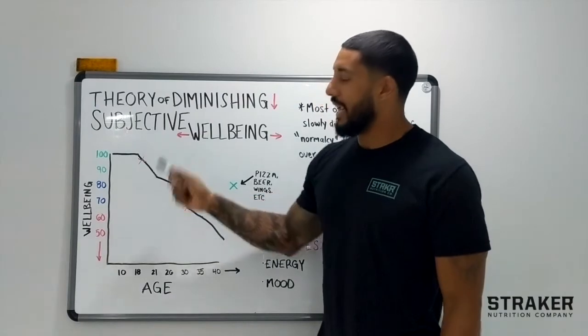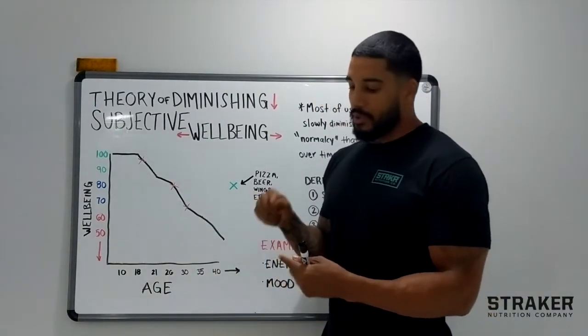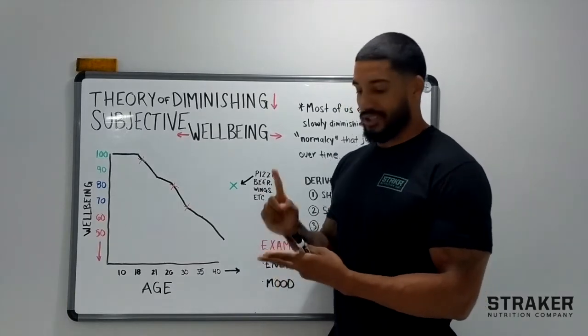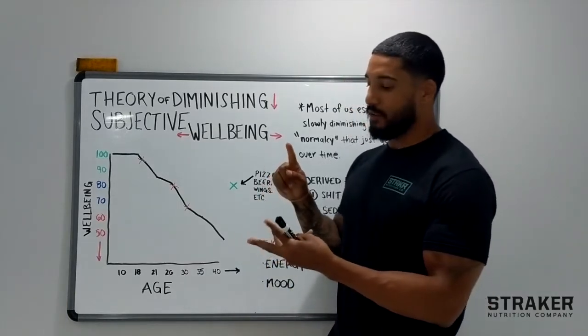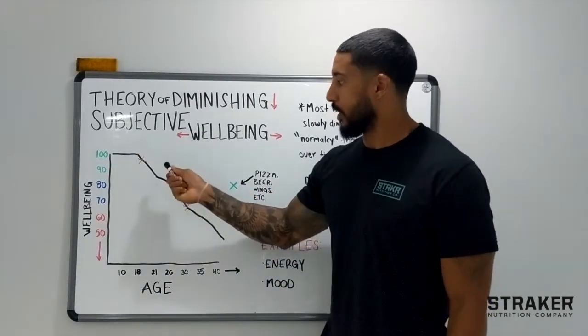And then right around age 18 you become in control of your actions. So typically diet really tanks, sleep really tanks, and usually an introduction of alcohol, cigarettes, and or drugs, and you start dropping off pretty good.